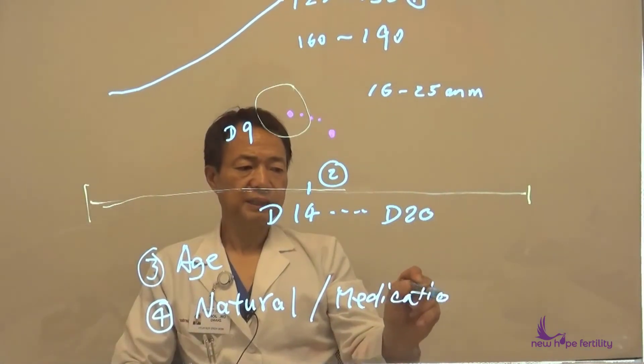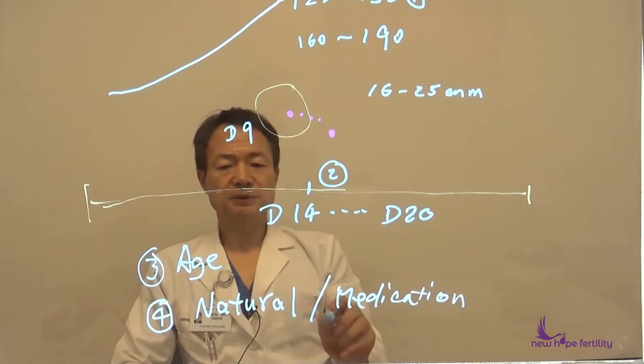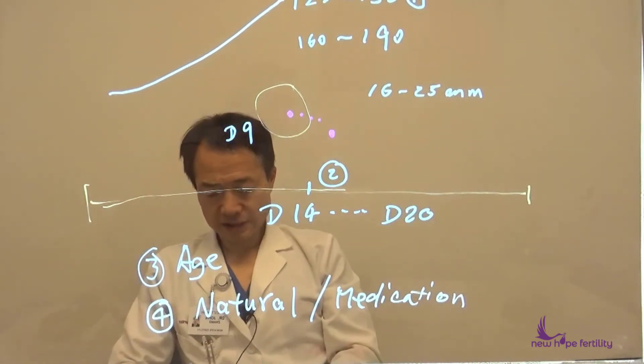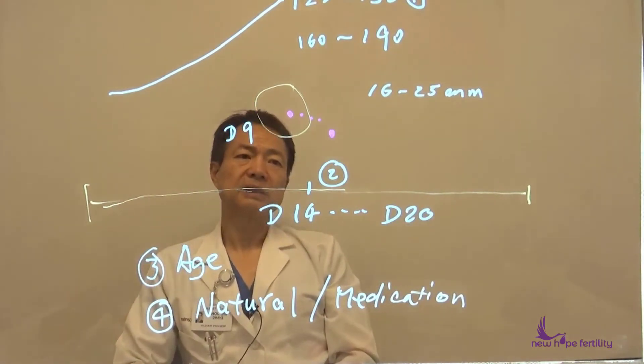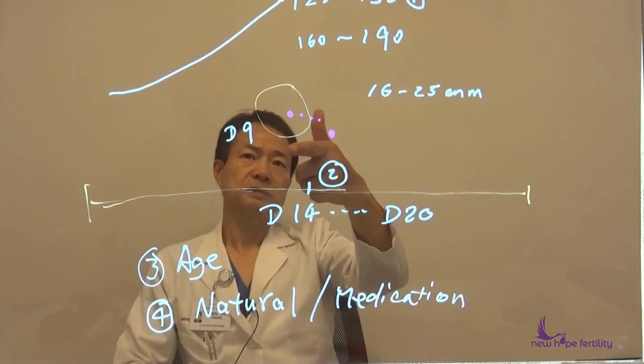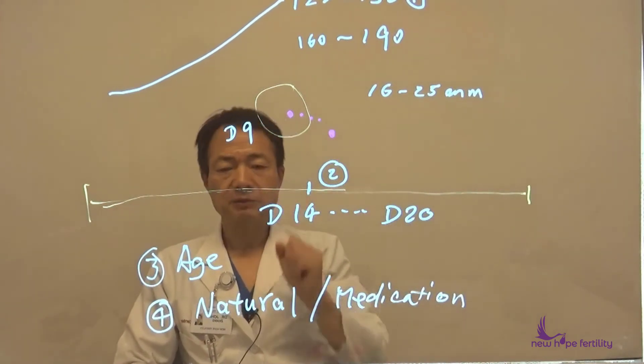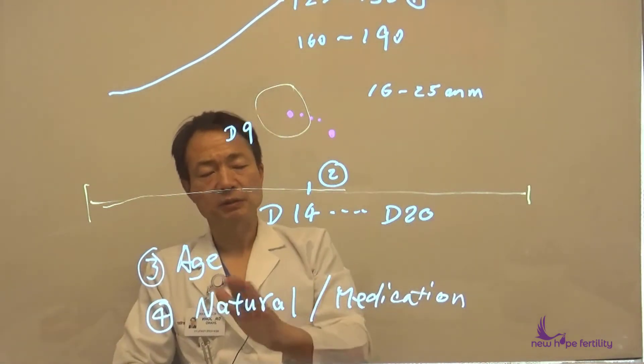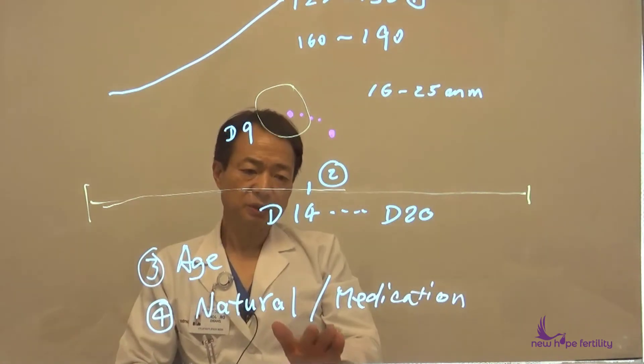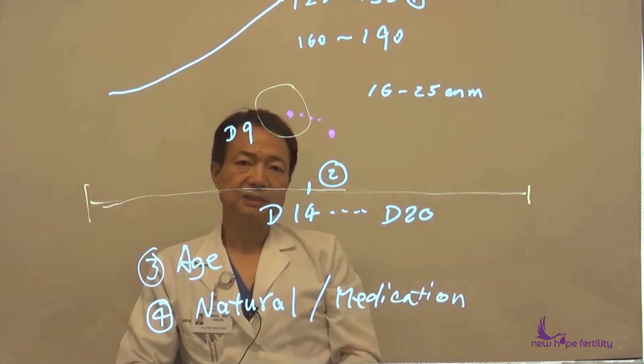So if the lady takes a huge amount of drugs with lots of injections, then the follicle will grow a little bit bigger. If it's a completely natural cycle without taking any medicine, compared with themselves, they tend to ovulate a little bit earlier so the follicle will be a little bit smaller.